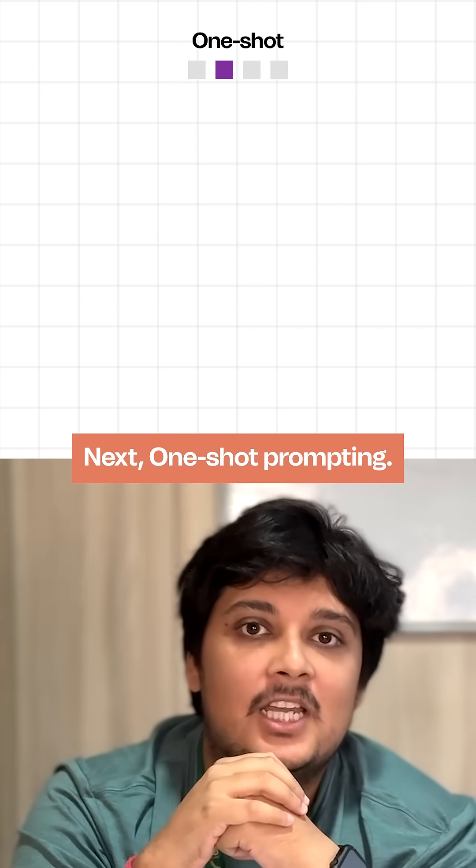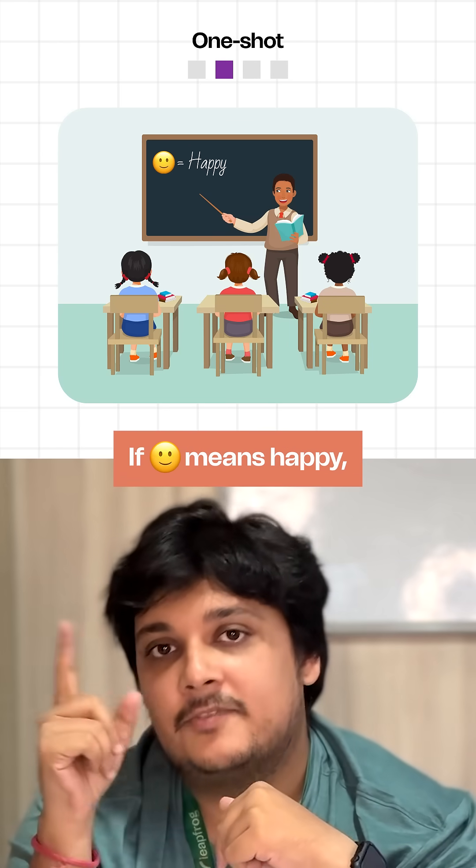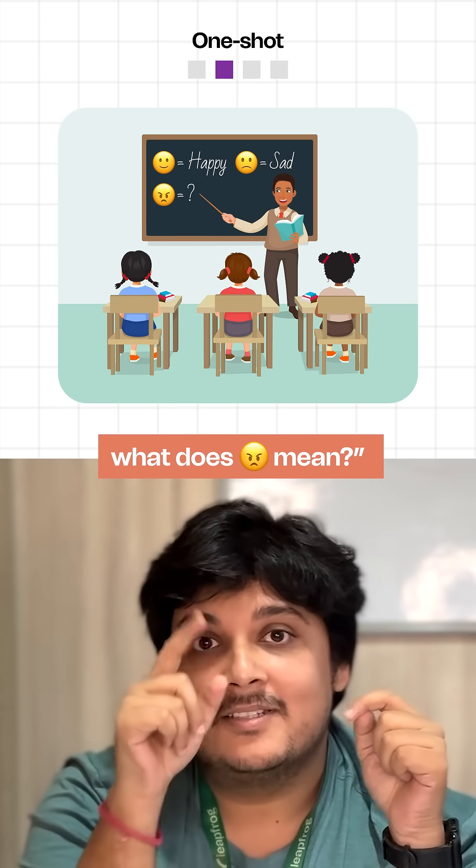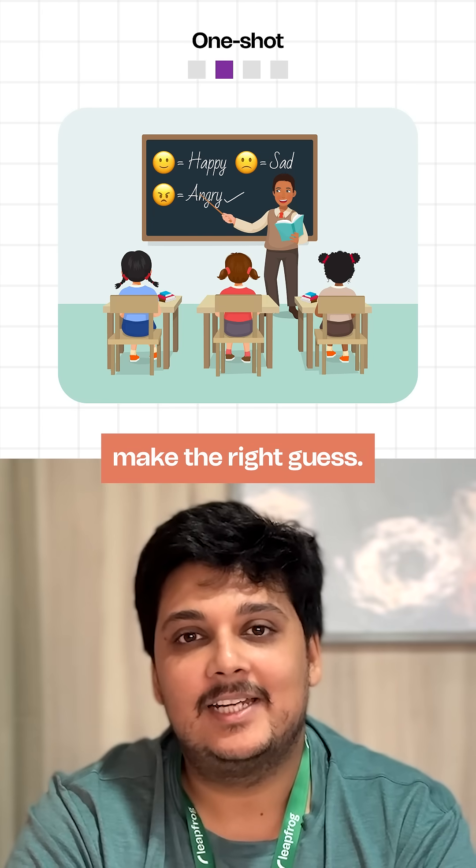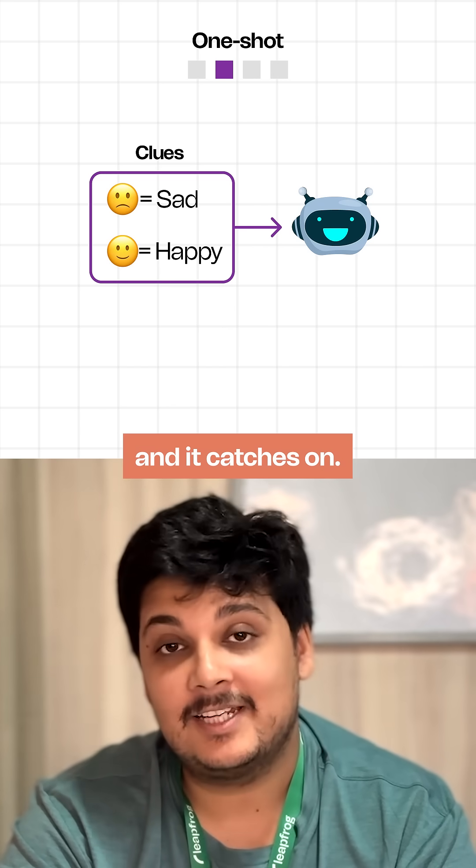Next, one-shot prompting. Imagine you are teaching kids about emojis and you ask if this emoji means happy and this one means sad, what does this mean? The hint helps them make the right guess. That's how one-shot prompting works. Give the AI a clue and it catches on.